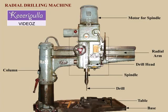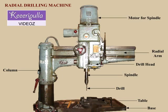Now we shall see the salient features of the radial drilling machine. Three movements are possible in a radial drilling machine: the radial arm can be swung around to any position about the column; it can also be raised or lowered along the column by means of an elevating screw; and further, the drill head mounted on the radial arm can be moved horizontally on the guideways.